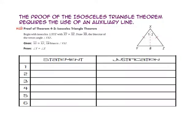When we prove the Isosceles Triangle Theorem, we will need to use an auxiliary line. Let's start with isosceles triangle XYZ. We are then going to draw auxiliary line XB, which will be the bisector of the vertex angle YXZ. Let's first begin with the given, stating that side XY is congruent to side XZ.